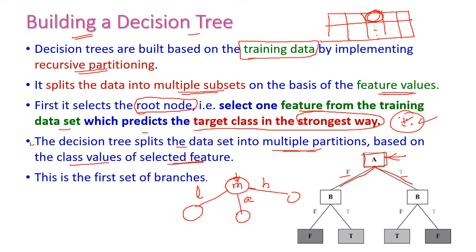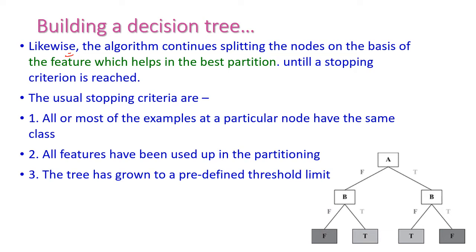Based on the value of the mark, the corresponding branch will be taken. Like the root node, the algorithm continues to split the nodes on the basis of the feature which helps the best partitioning. Once we define the root node, we need to select the next feature for further partitioning. The same process continues until it reaches the stopping criteria.